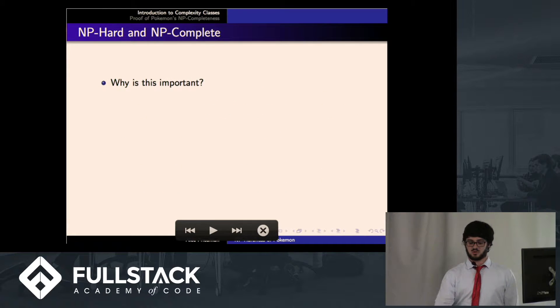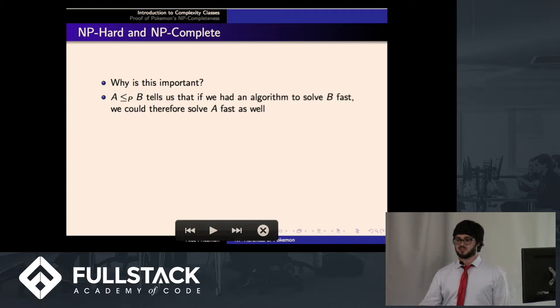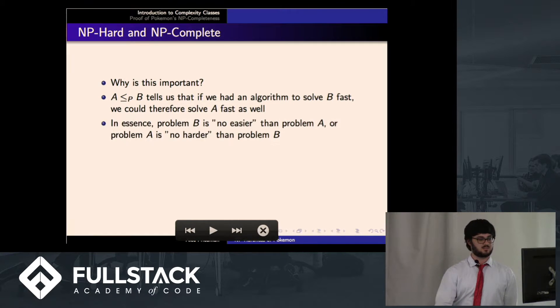So why is this important? Like I stated, if A is reducible to B in polynomial time, that means if we had an algorithm that solved B fast, we would be able to solve A fast. So in essence, B is no easier than A, and A is no harder than B.